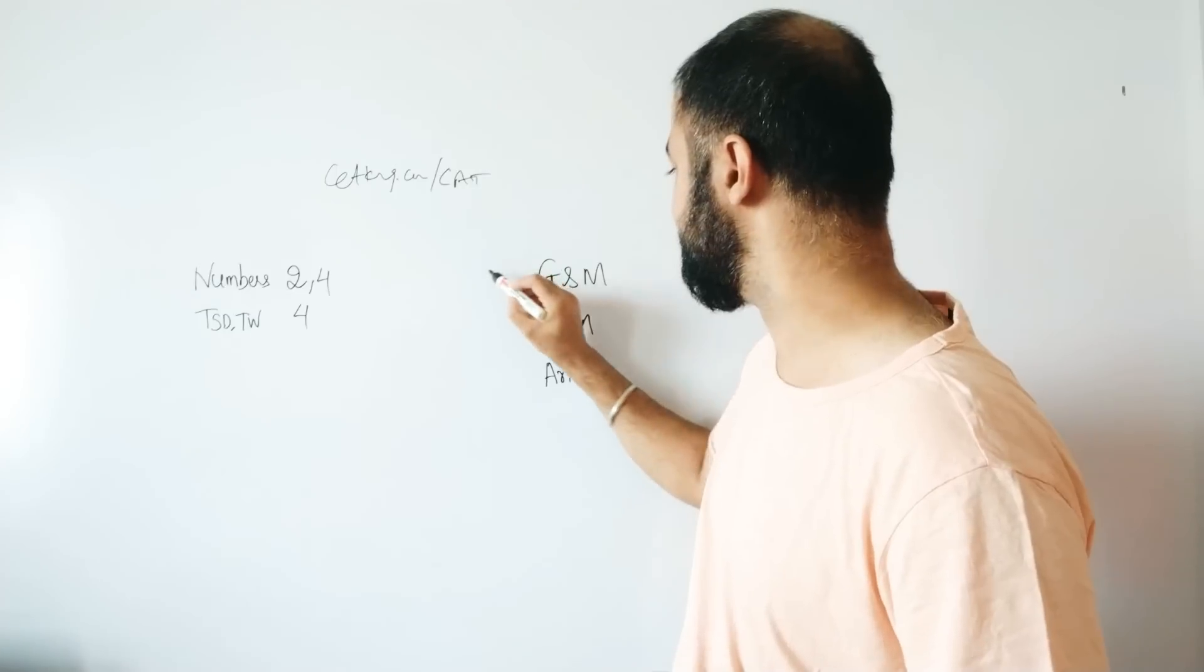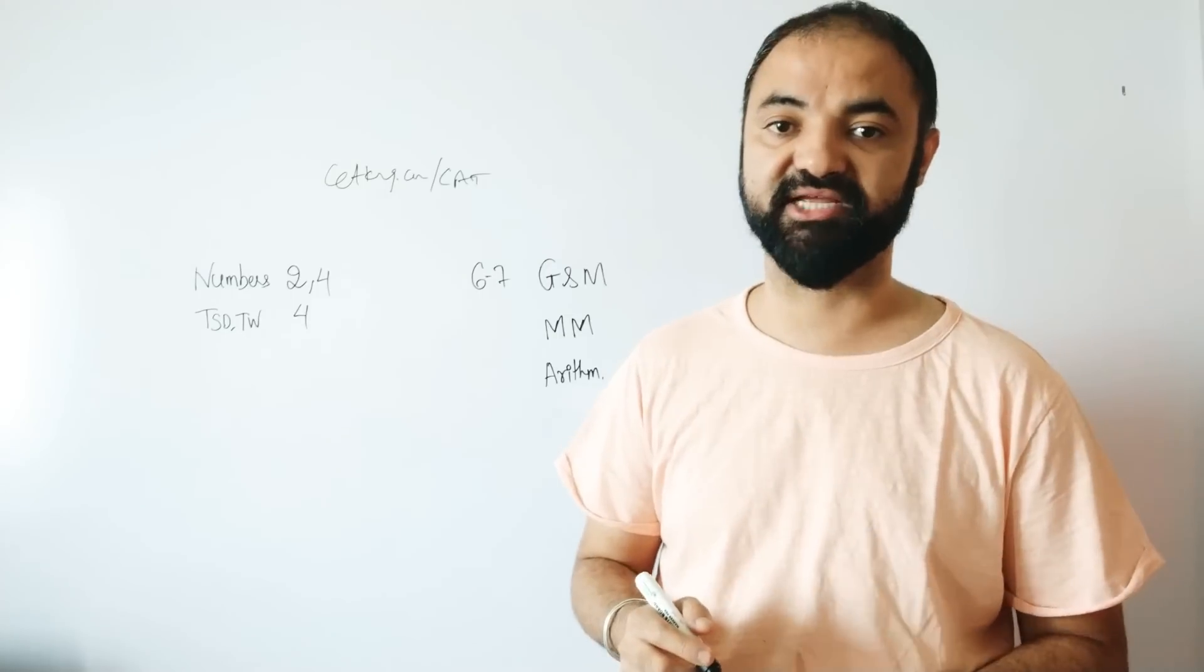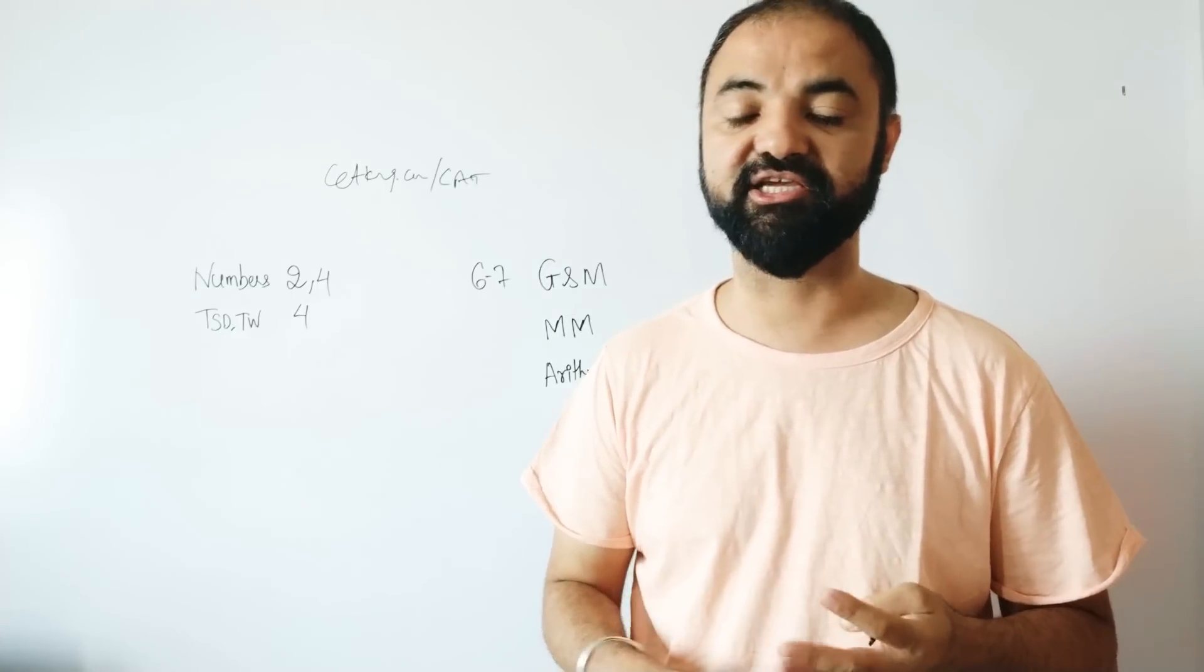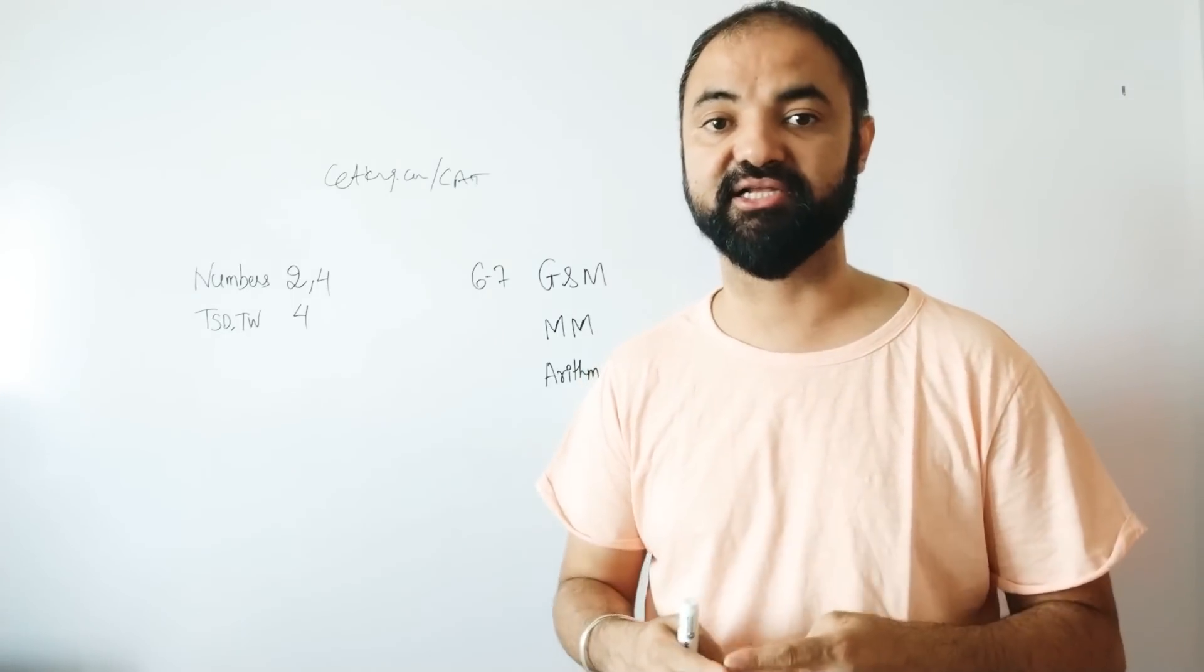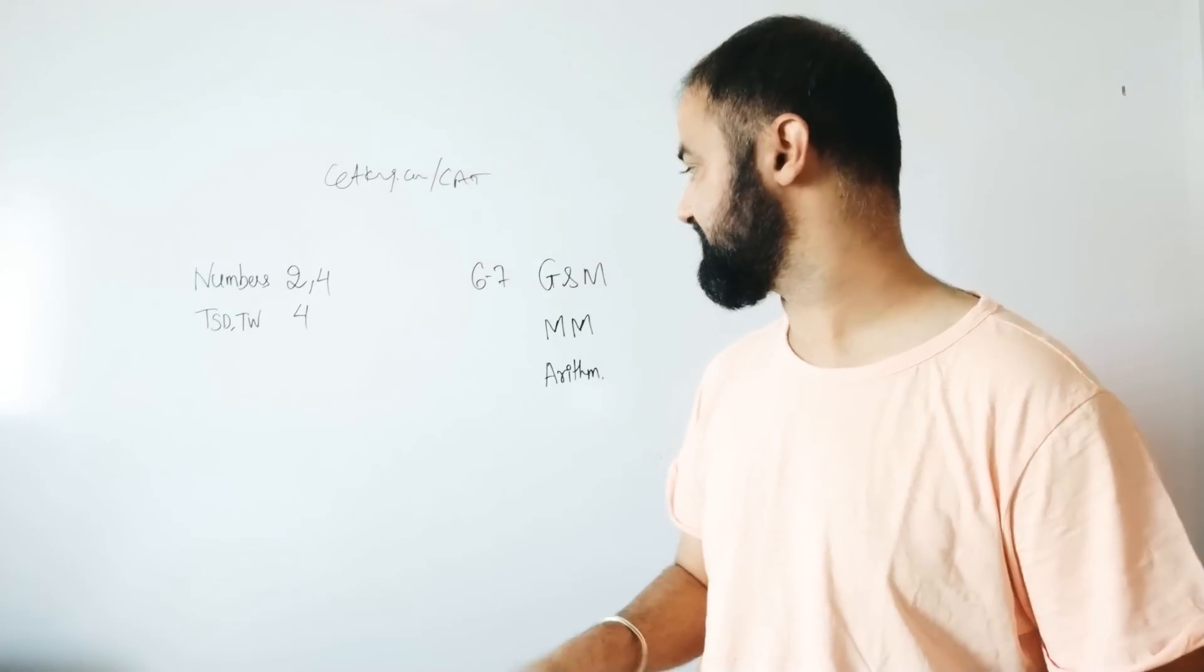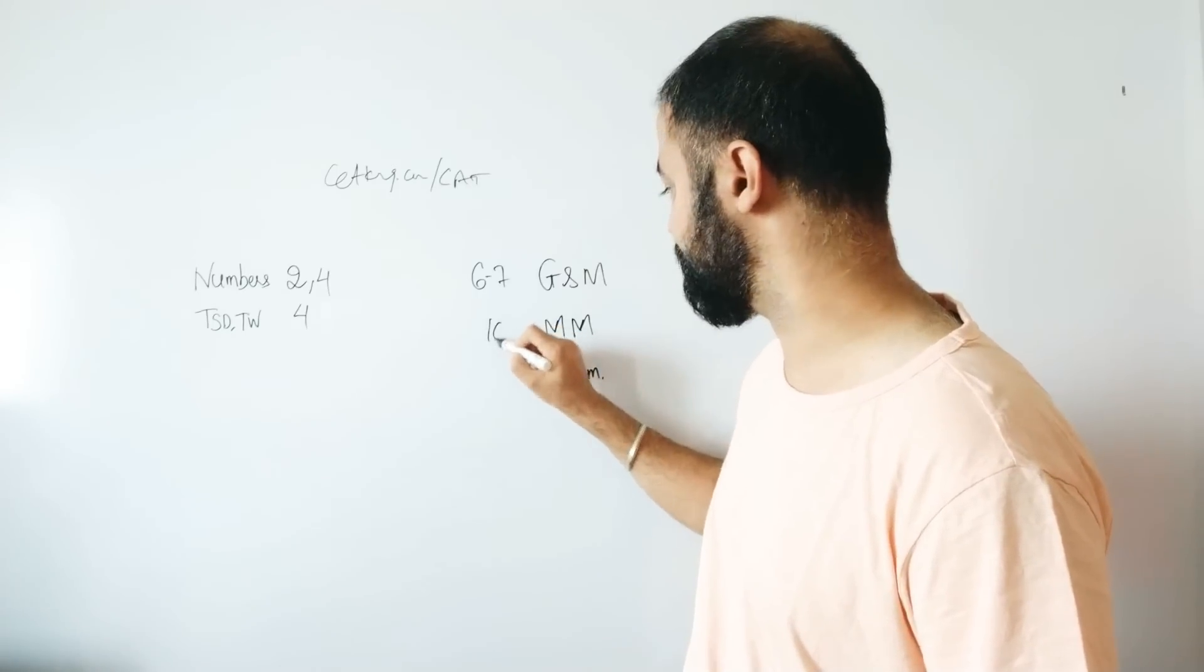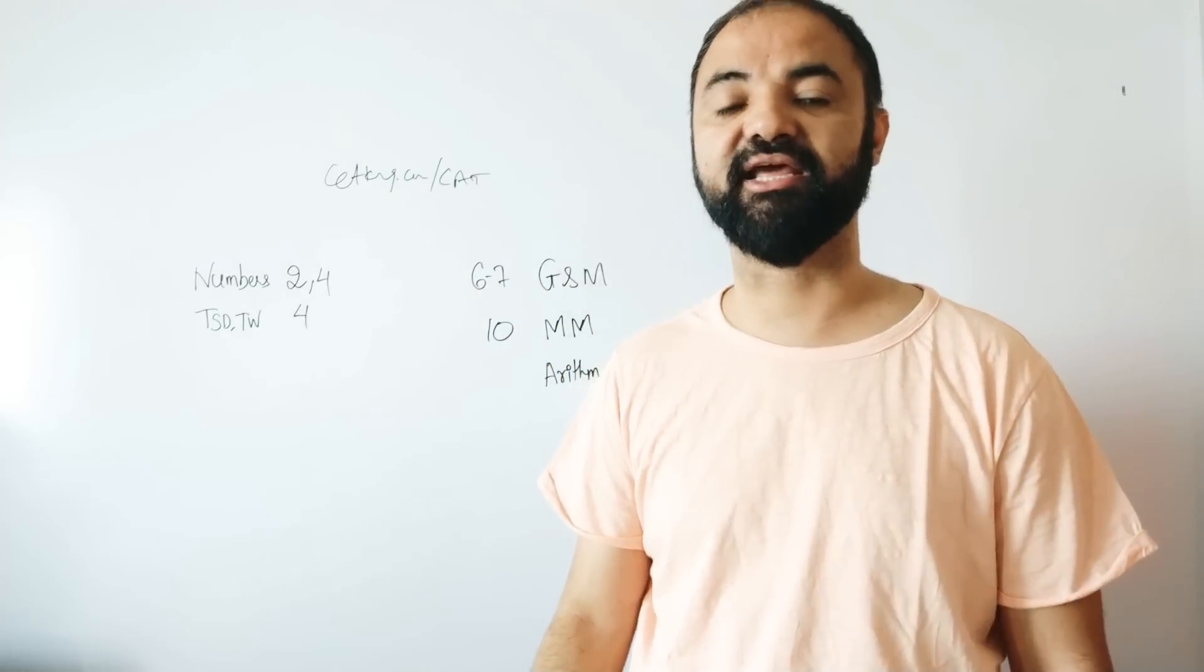Geometry and mensuration combined is six to seven questions - that's what was there last year and what you can expect this year as well. Geometry includes everything: angles, circles, triangles, areas, volumes - everything together. Geometry and mensuration is six to seven questions.